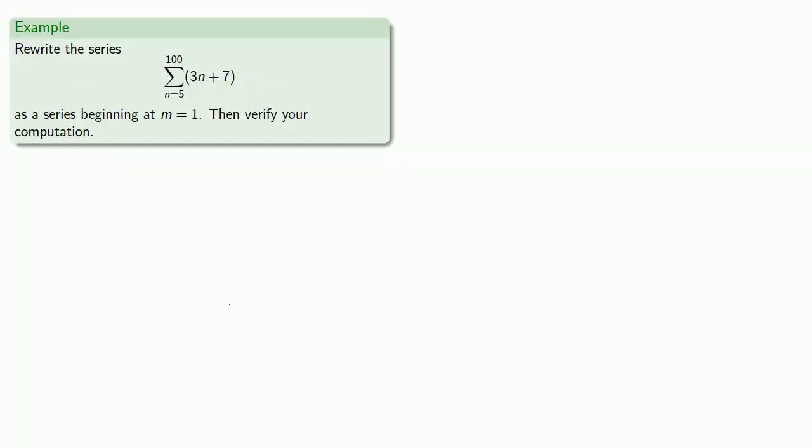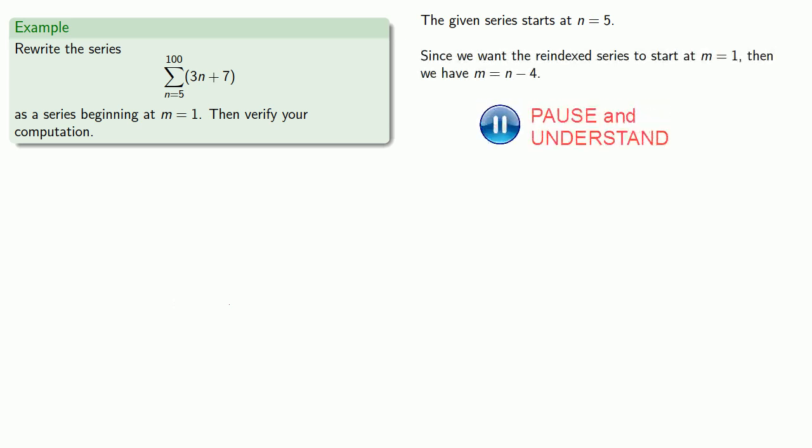Consider a series where our index starts with n equals 5 and ends with n equals 100. We would like to rewrite this as a series beginning at index m equals 1. In general, it's always a good idea to verify that we have the same thing. First of all, we note that the given series starts at n equals 5. Since we want the re-indexed series to start at m equals 1, then we have m equals n minus 4.